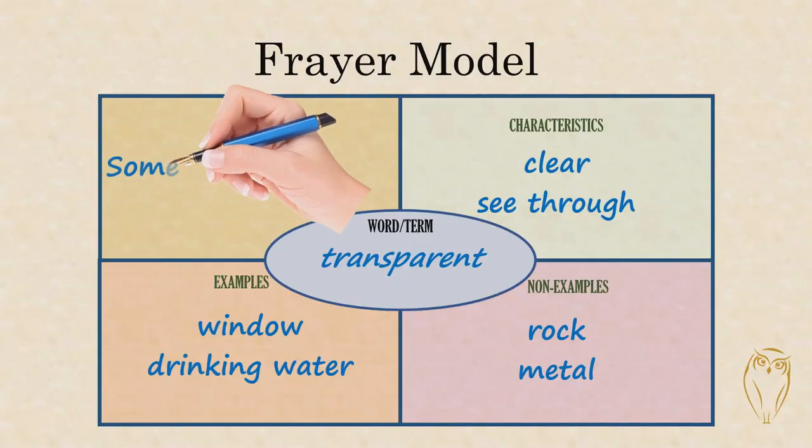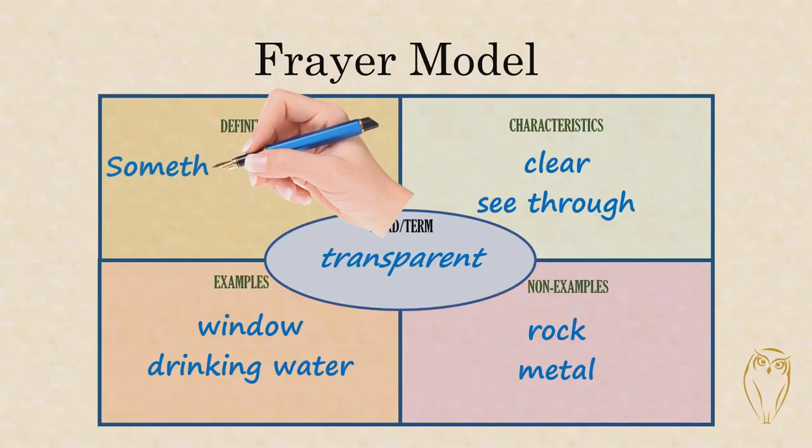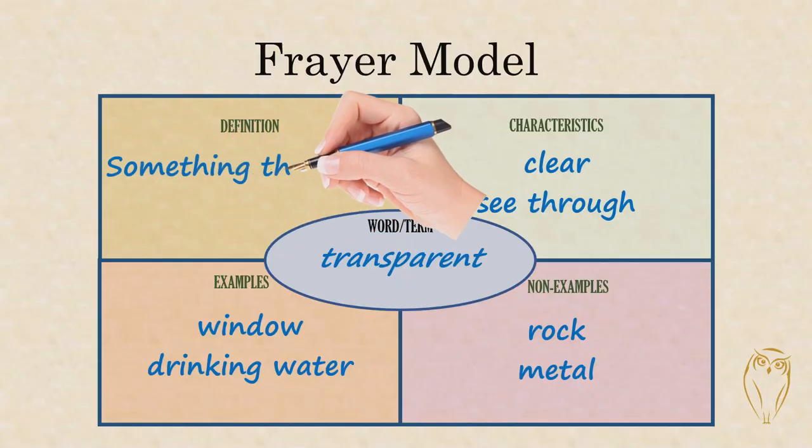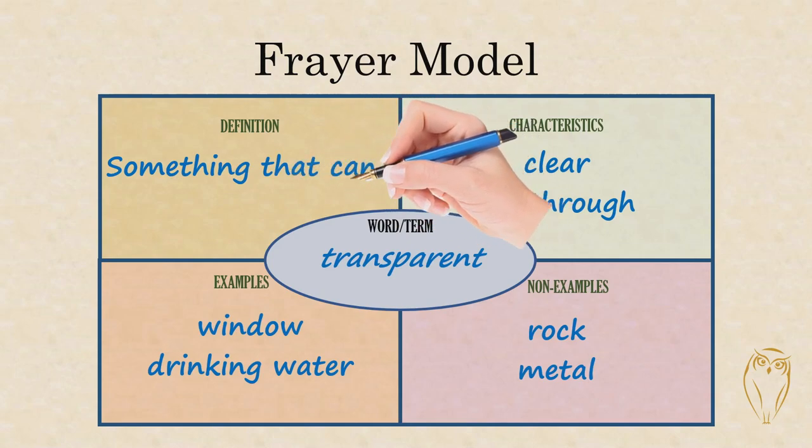Now I have one block left, and that's here to develop and write a definition of 'transparent.' So I look over all the things I wrote in my other blocks and think about what's a good definition, and I might come up with something like 'that which can be clearly seen through' or 'something that I can look through and clearly see an object that's on the other side.'